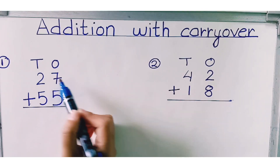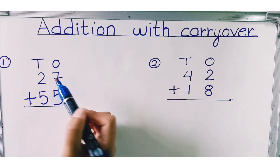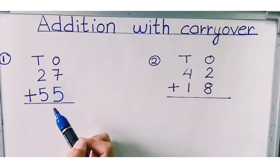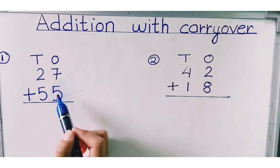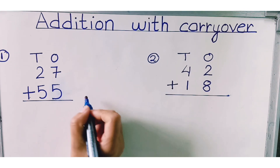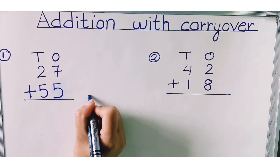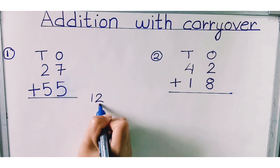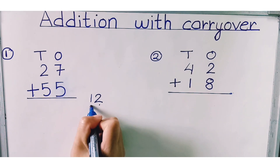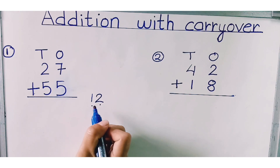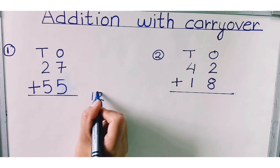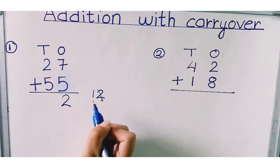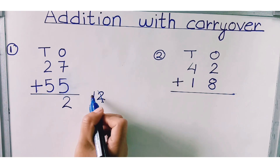You have to add seven and five first. Seven plus five is equals to twelve. In twelve, two is in ones place and one is in tens place. So let's write two in ones place.